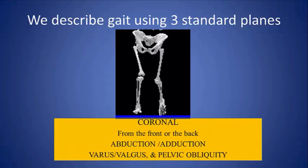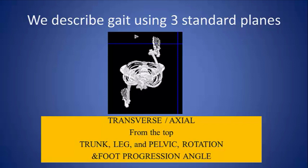The coronal plane is as if looking at the subject from the front or the back. In this plane, you can see abduction or adduction at the hip, varus or valgus at the knee, foot and ankle, as well as pelvic obliquity. The third plane is one that you don't see visually, but you can reconstruct in your brain using three-dimensional vision. In this view, we see rotation of the trunk, leg, and pelvis, as well as the foot progression angle, which is the angle the foot makes with the line of progression of the body as a subject walks.